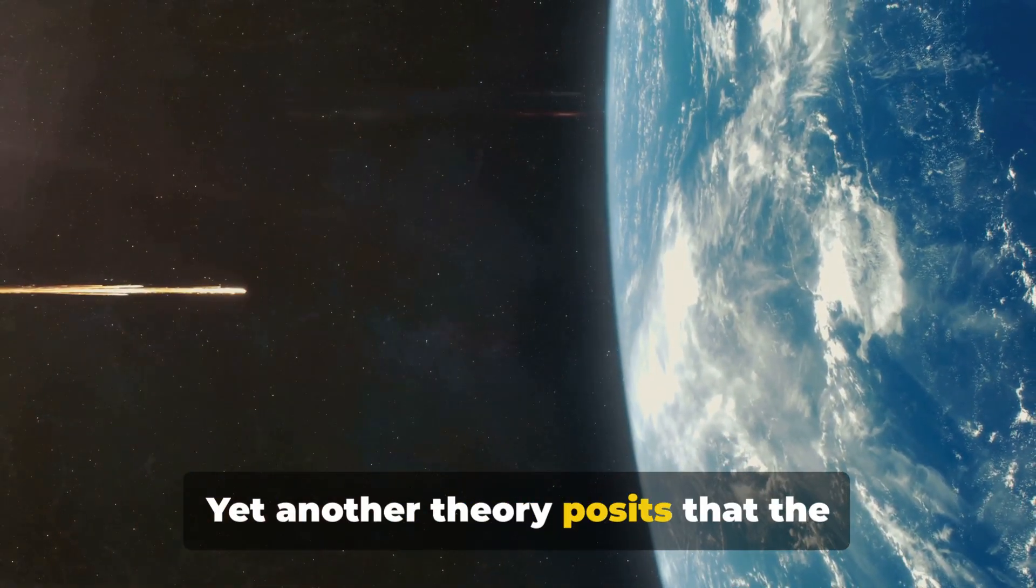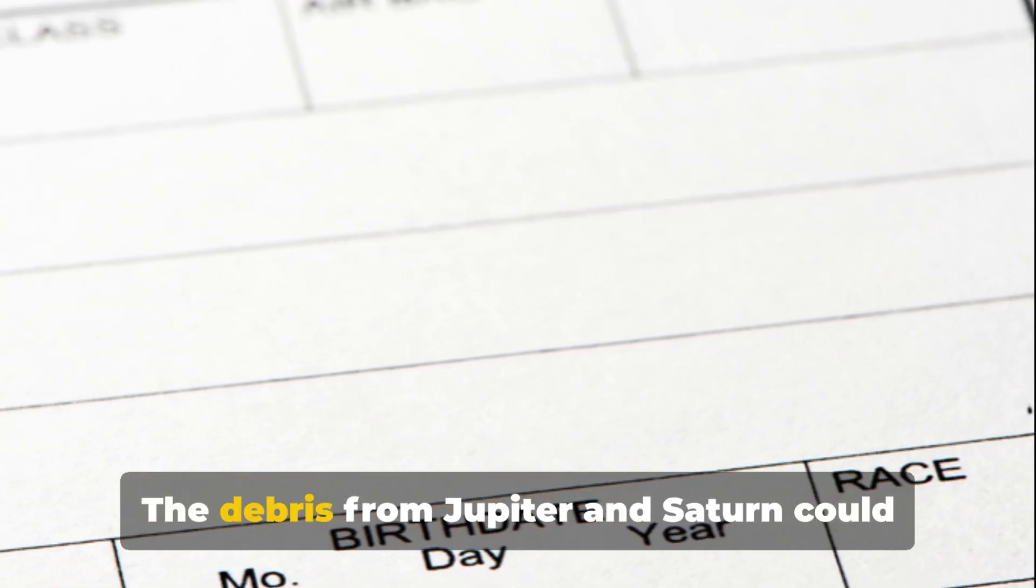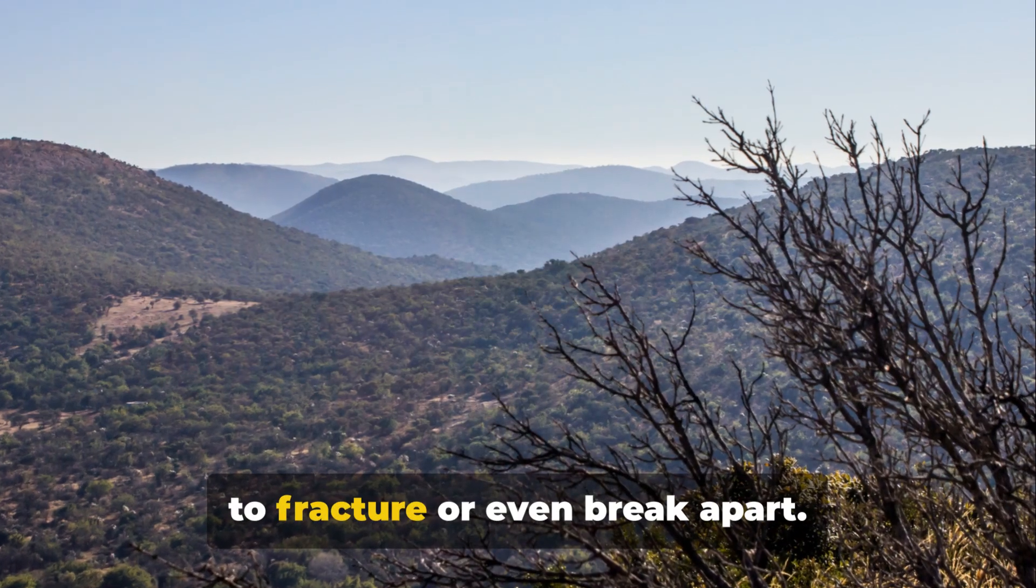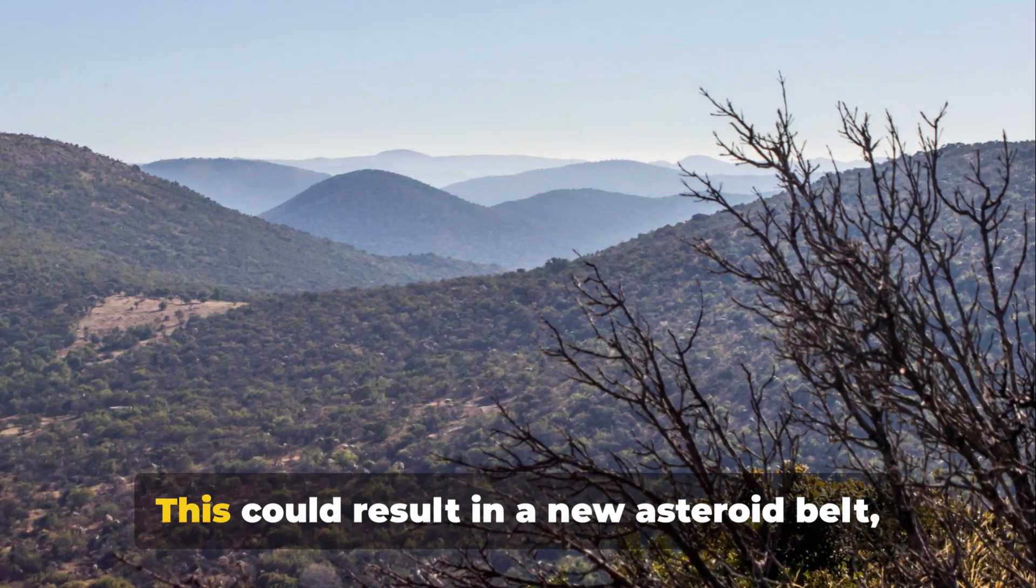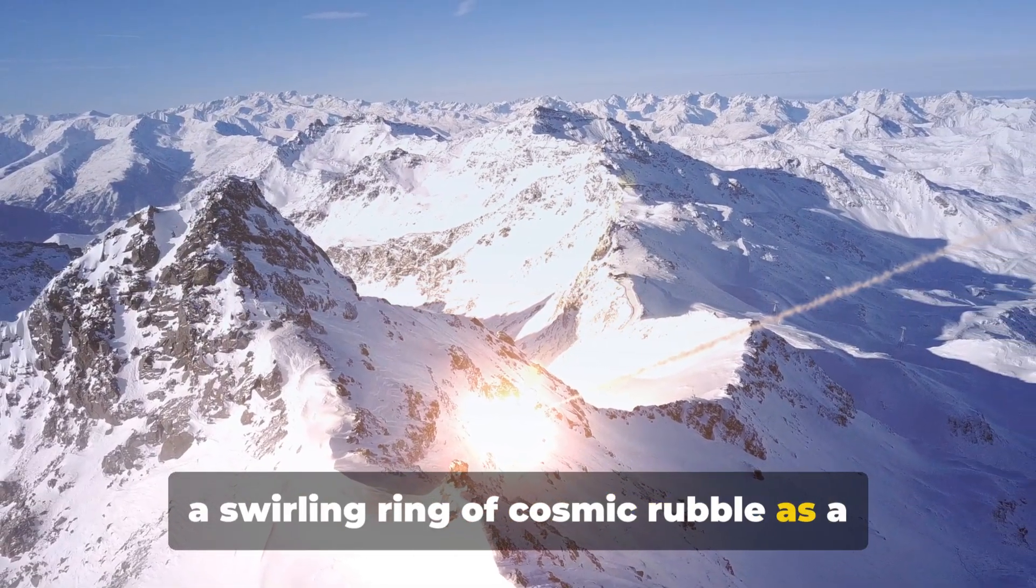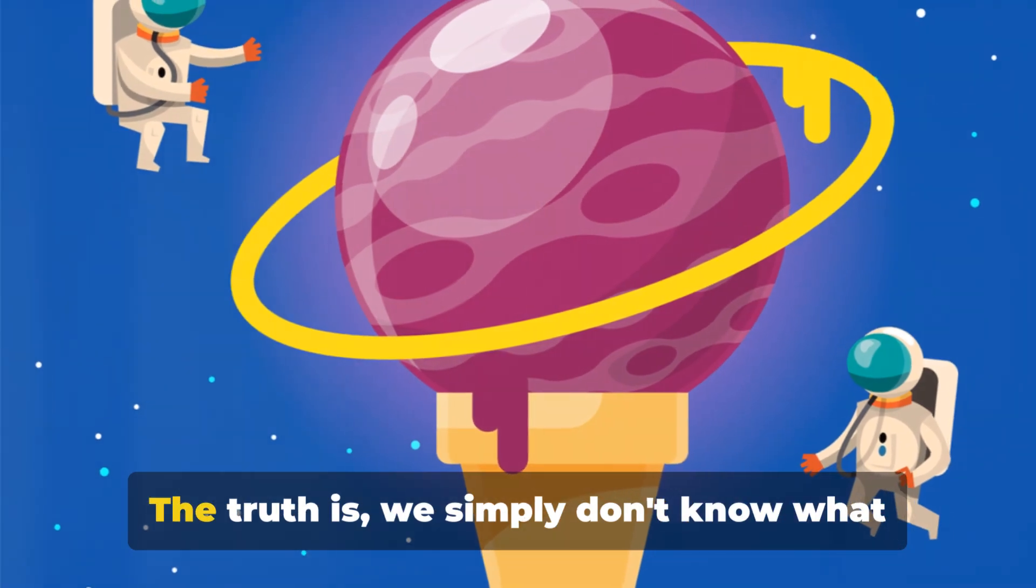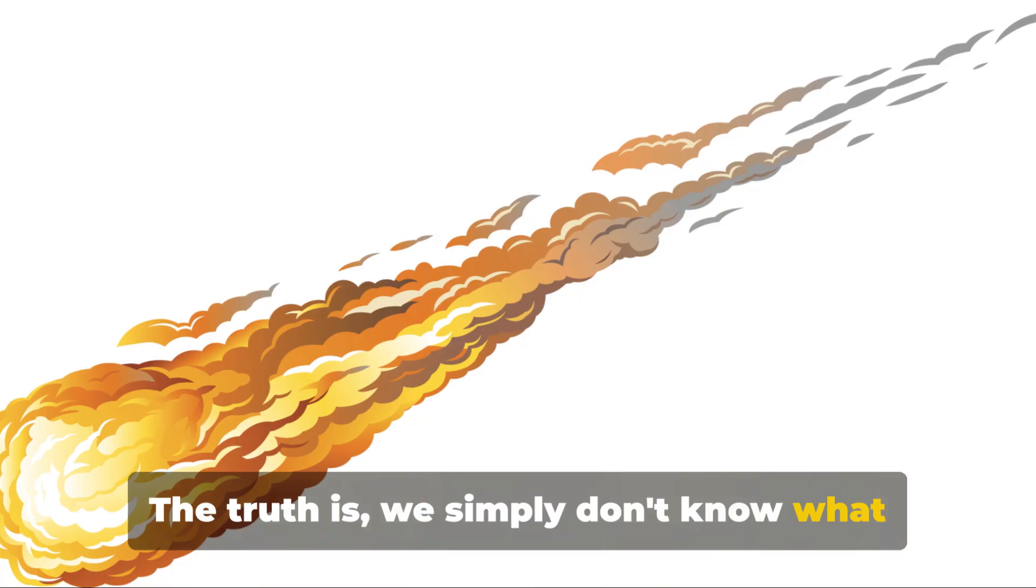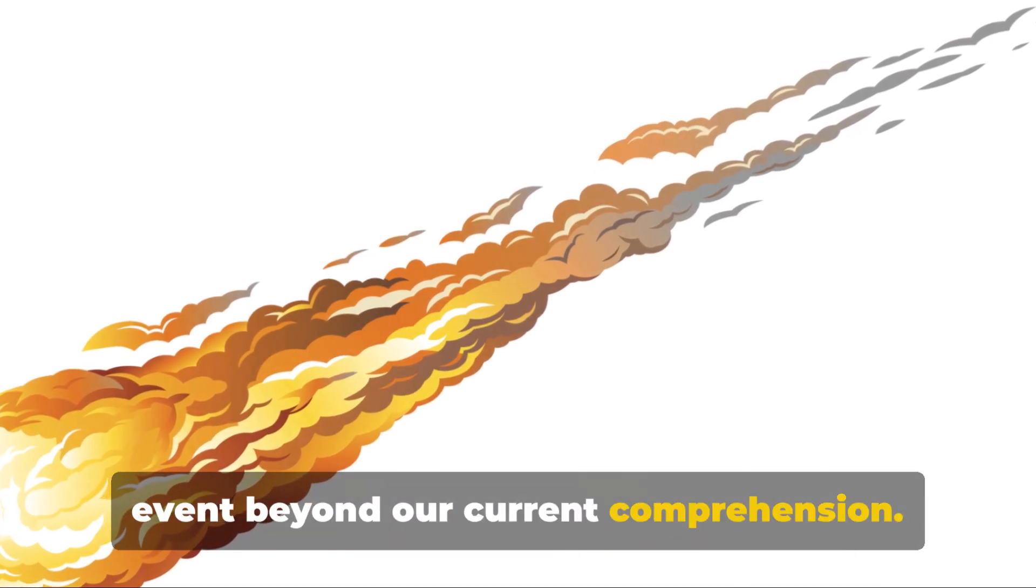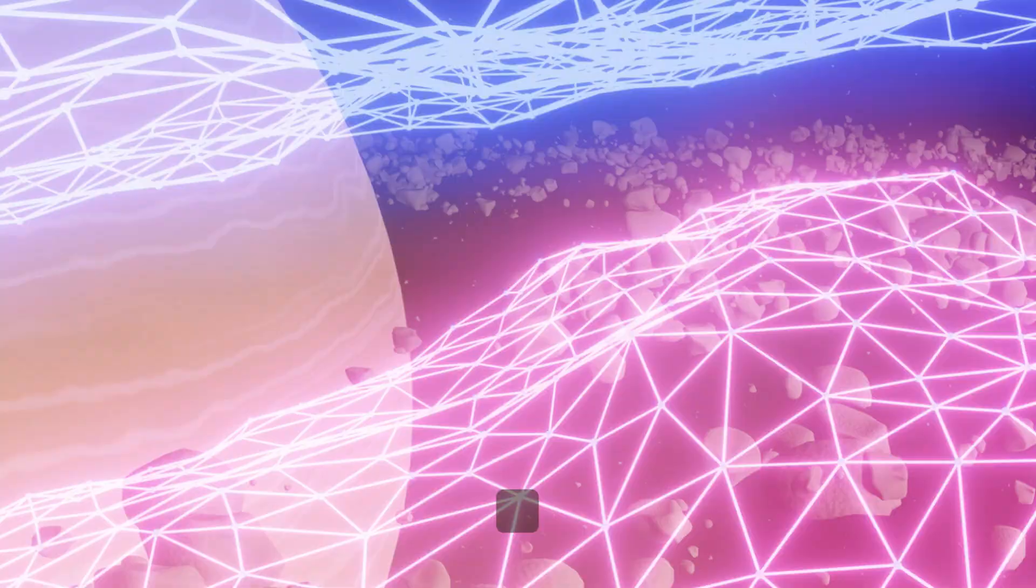Yet another theory posits that the collision could trigger a cascade of smaller collisions. The debris from Jupiter and Saturn could pelt other planets and moons, causing them to fracture or even break apart. This could result in a new asteroid belt, a swirling ring of cosmic rubble as a constant reminder of the cataclysmic event. But of course, these are all just theories. The truth is, we simply don't know what would happen. The collision of Jupiter and Saturn is an event beyond our current comprehension. It's a cosmic mystery that challenges our understanding of the universe and our place within it.